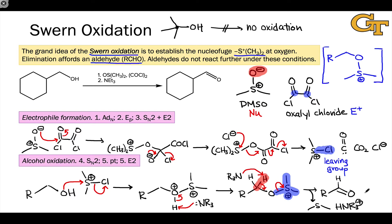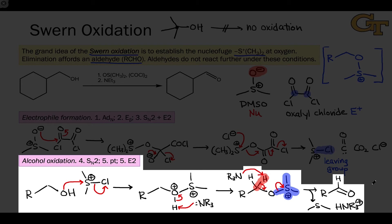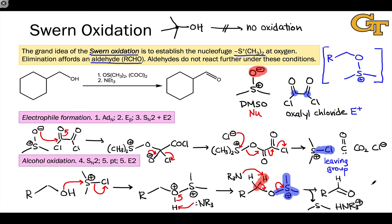To chunk out the Swern oxidation mechanism as a whole: the first stage involves formation of the active electrophile — the chlorosulfonium species with the S-Cl bond and two methyl groups with positive charge on sulfur. That leads to the second stage in which the O-S bond forms through an SN2 step, and after a proton transfer there's an elimination that generates the aldehyde. The first two elementary steps — nucleophilic addition and beta elimination — represent a nucleophilic acyl substitution: substitution of the DMSO oxygen for the chlorine in oxalyl chloride. In the third step we form the active electrophile, which reacts with the alcohol; elimination ultimately gives the carbonyl C=O double bond.